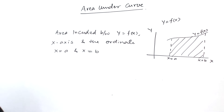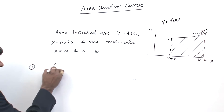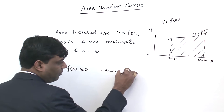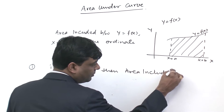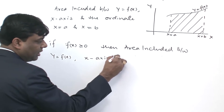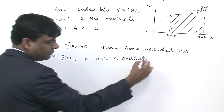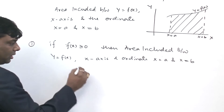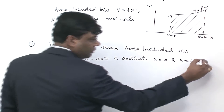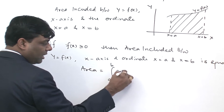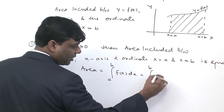So, we need to see that area included between y = f(x), x-axis and the ordinate x = a and x = b. If f(x) is greater than or equal to 0, then the area included between y = f(x), x-axis and the ordinate x = a and x = b is: area = integral a to b of f(x) dx, or integral a to b of y dx.